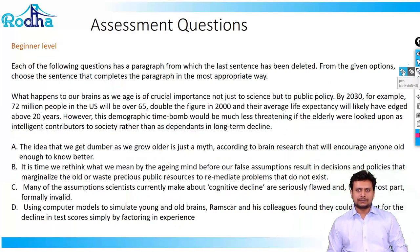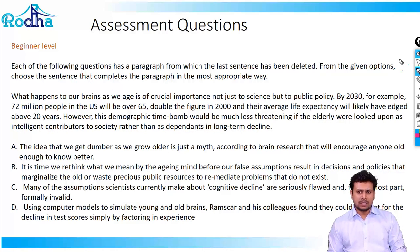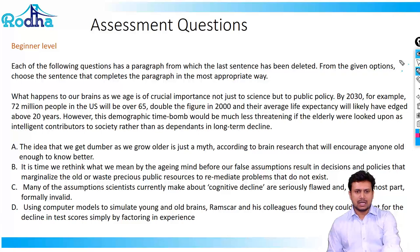The next question says: what happens to a brain as we age is of crucial importance, not just to science but to public policy. By 2030, for example, 72 million people in the US will be over 65 — double the figure in 2000 — and their average life expectancy will likely have edged above 20 years. However, this demographic time bomb would be much less threatening if elderly people were looked upon as intelligent contributors to society rather than as dependents in long-term decline.